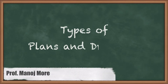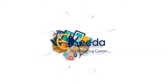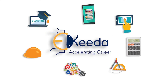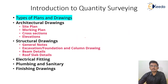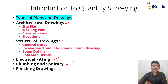Welcome to this course on certification in quantity surveying. Today we'll be discussing the various types of plans and drawings used in civil engineering while calculating quantities. There are many plans, bifurcated into different ones, but the basic important ones are: architectural drawings, structural drawings, electrical fittings, plumbing and sanitary fittings, and finishing drawings.